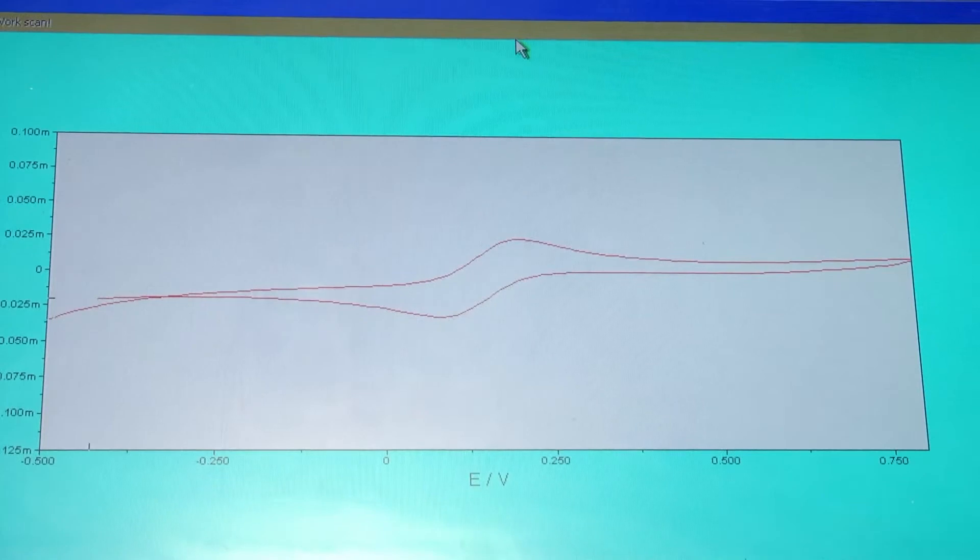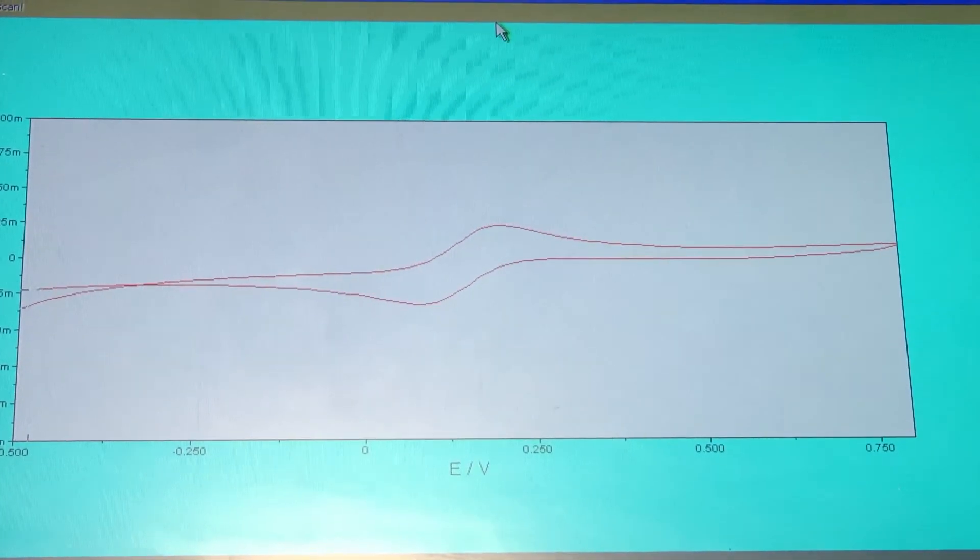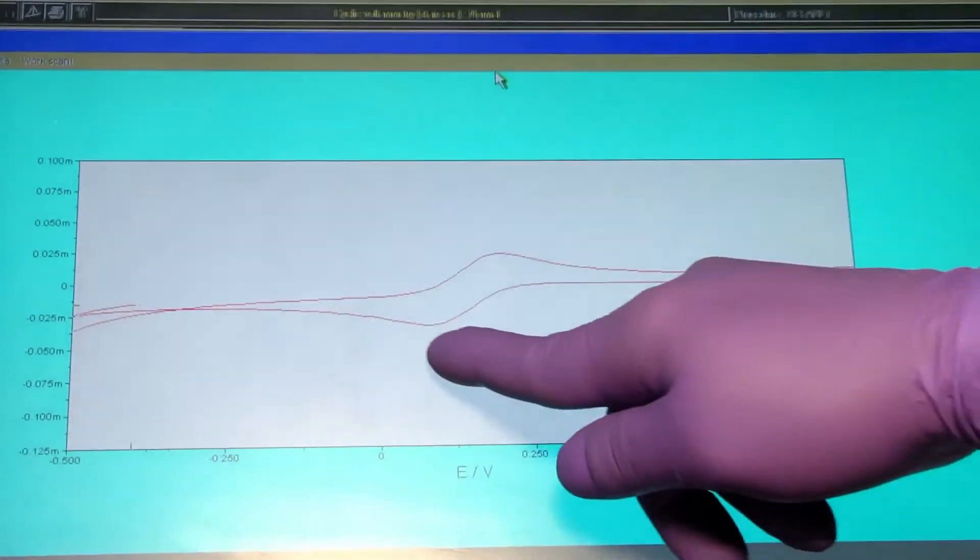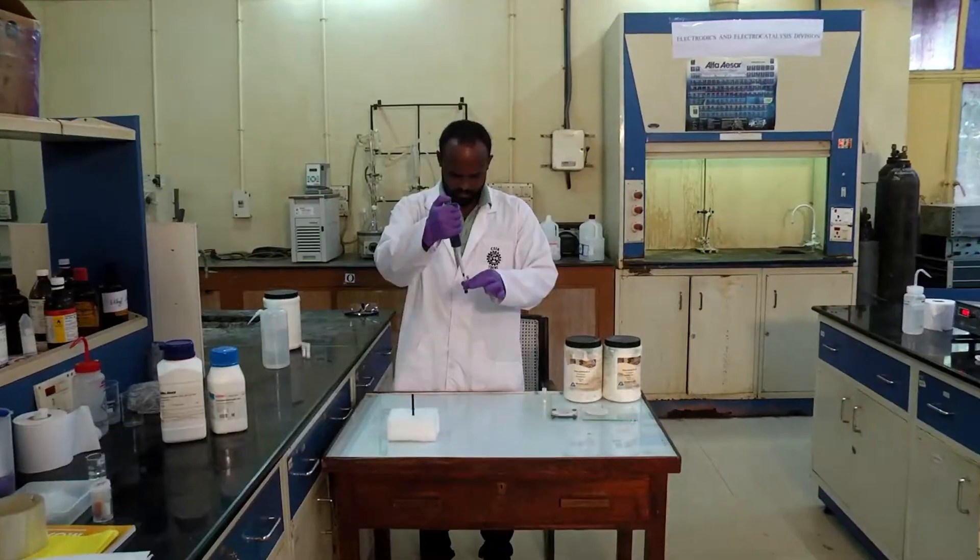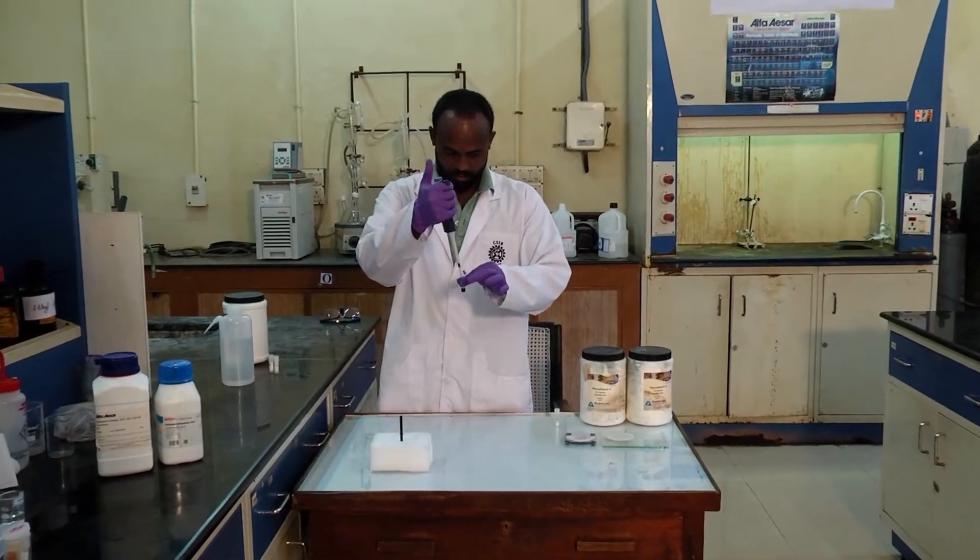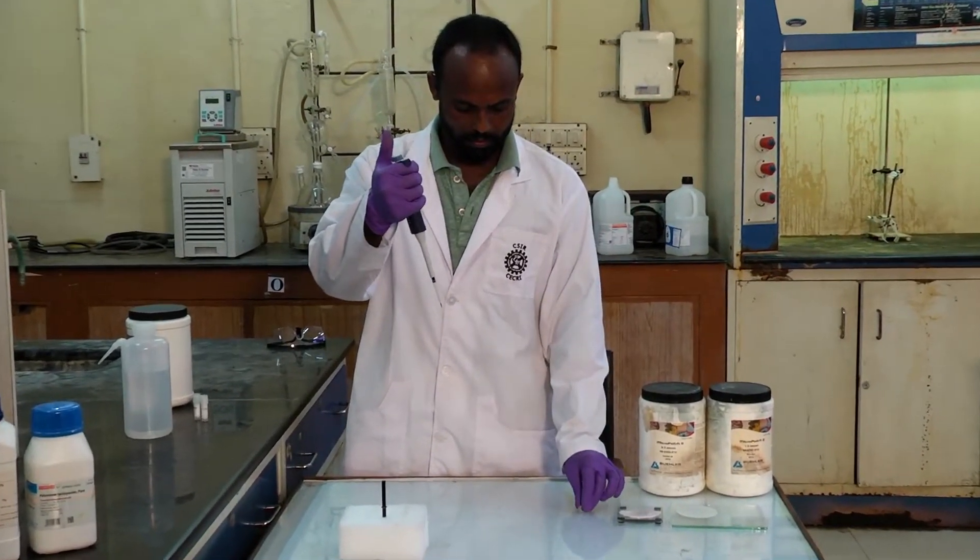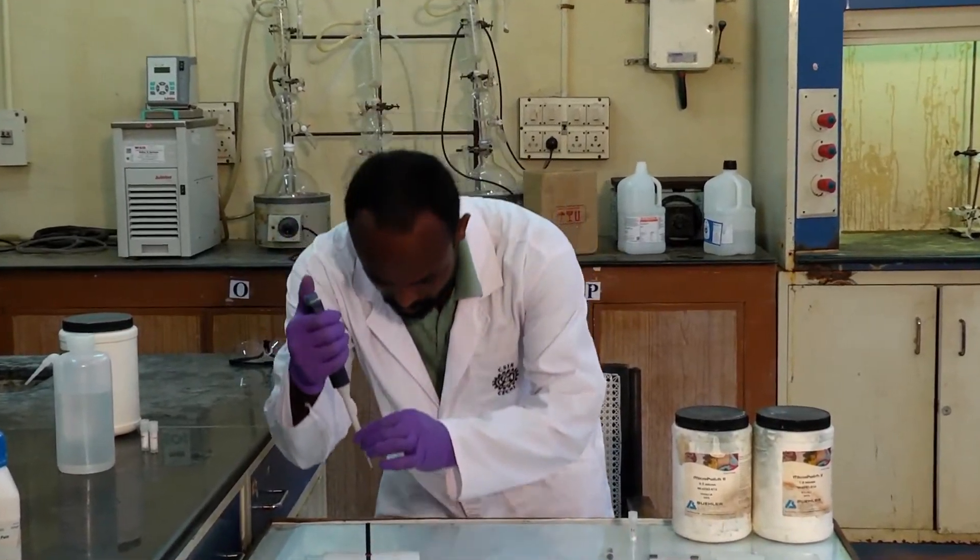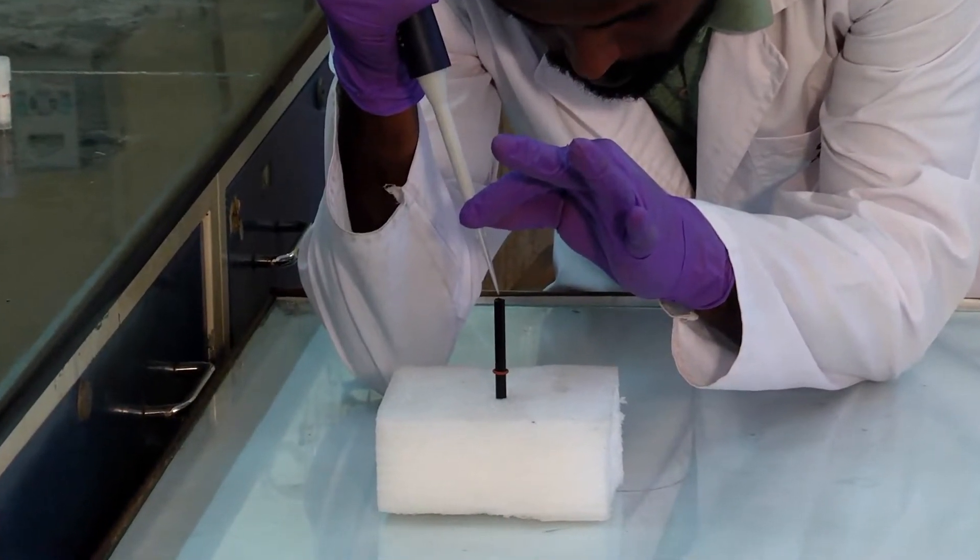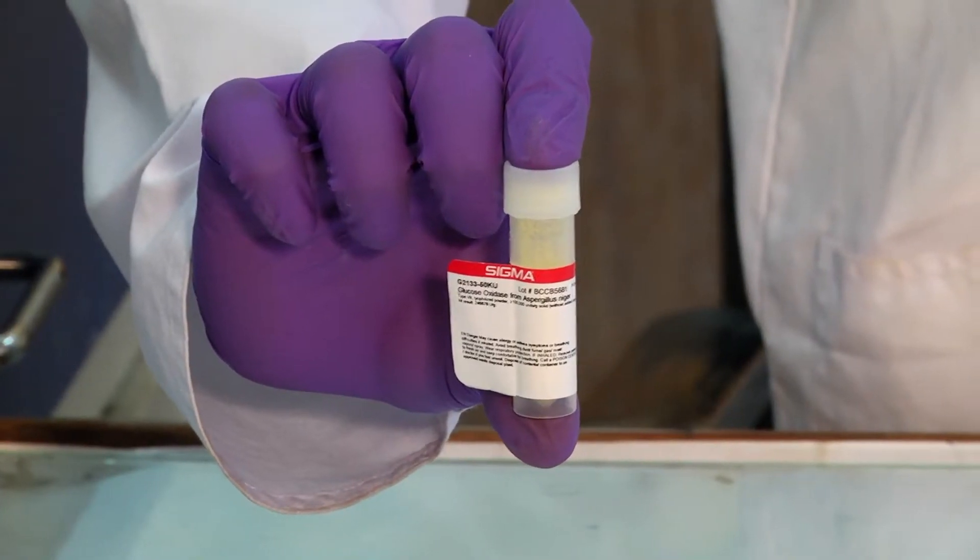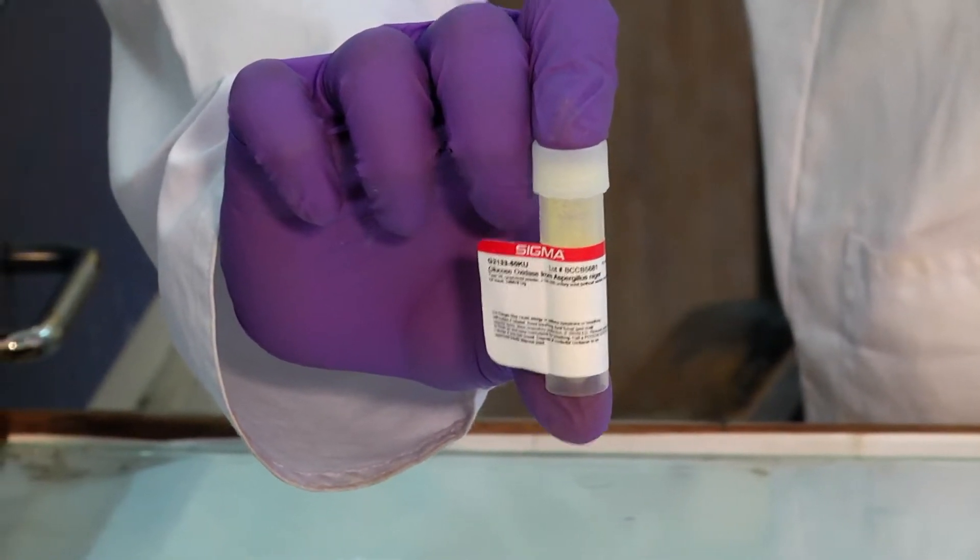Thus exhibiting a perfect reversible reaction. The formation of redox peaks confirms the surface cleanliness of the electrode. After that, a dispersion of 1 milligram per milliliter of multi-walled carbon nanotube in isopropanol water mixture was prepared. An aliquot of 10 microliters is drop-coated on the surface of cleaned electrode.